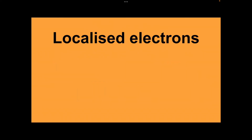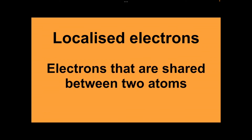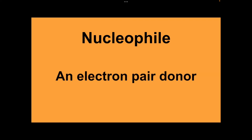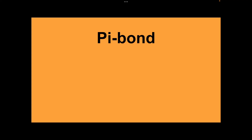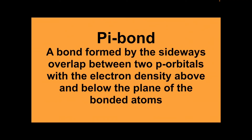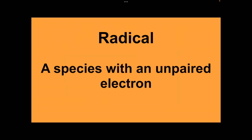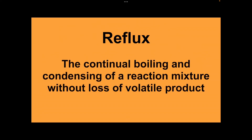Localised electrons: electrons that are shared between two atoms. Nucleophile: an electron pair donor. Pi bond: a bond formed by the sideways overlap between two p orbitals, with the electron density above and below the plane of the bonded atoms. Radical: a species with an unpaired electron. Reflux: the continual boiling and condensing of a reaction mixture without loss of volatile product.